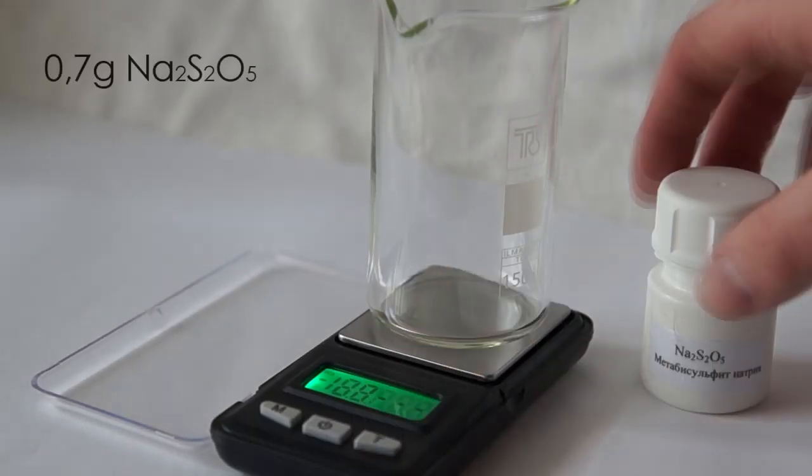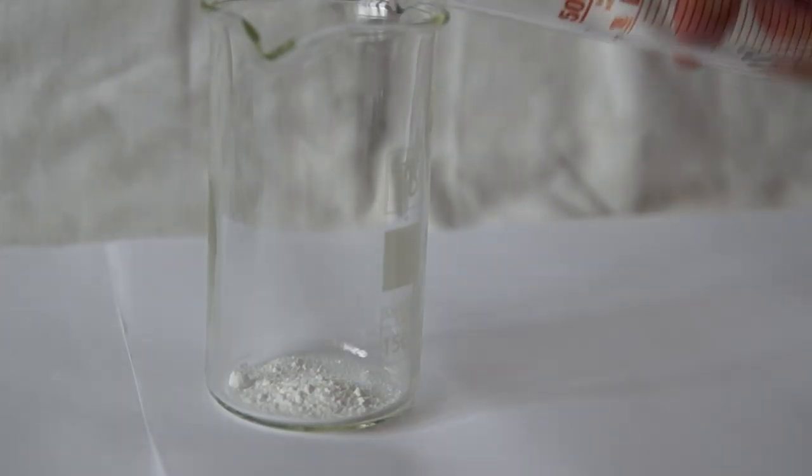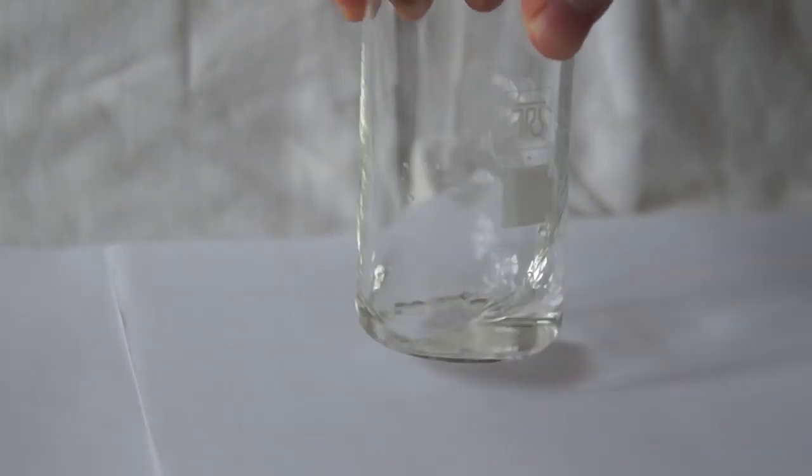For the first solution take 0.7 g of sodium metabisulfate and dissolve it in 20 ml of distilled water.